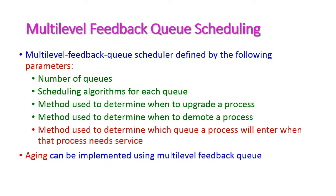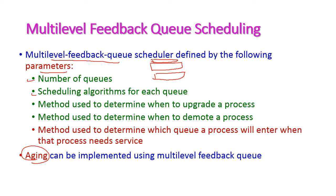Now let us see the parameters of the multi-level feedback queue scheduler. This is almost similar to multi-level queue except for the aging concept. The first parameter is the number of queues — we need to define how many ready queues exist. The second parameter is the scheduling algorithm for each queue; there are different scheduling algorithms available and we need to define which algorithm applies to which queue.